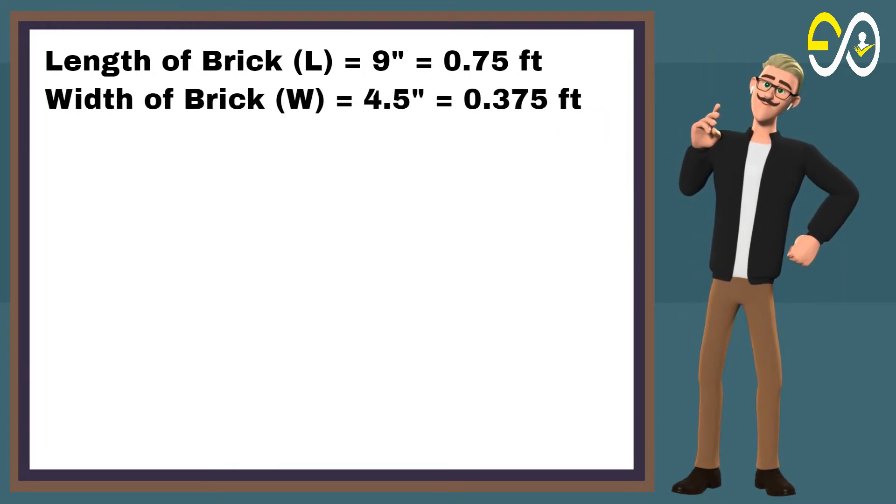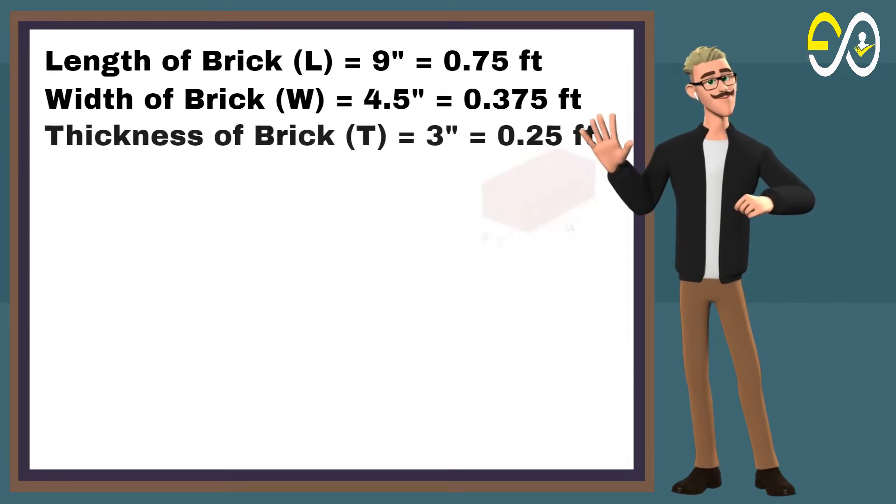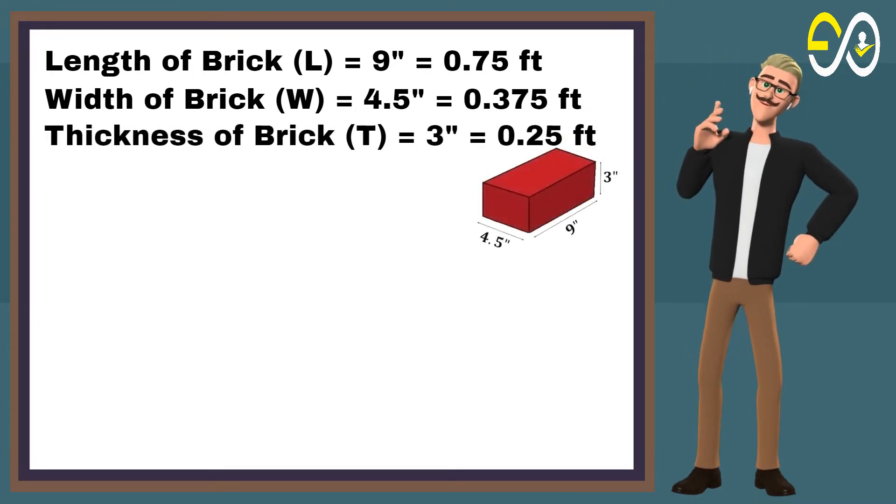Width of brick equals 4.5 inches, equals 0.375 feet. Thickness of brick equals 3 inches, equals 0.25 feet.